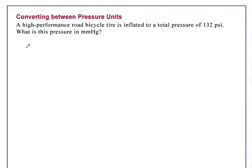Converting between pressure units. A high-performance road bicycle tire is inflated to a total pressure of 132 pounds per square inch. What is this pressure in millimeters of mercury?